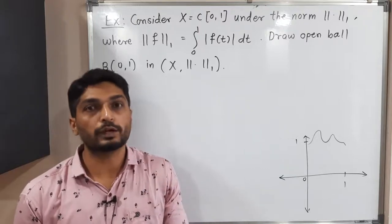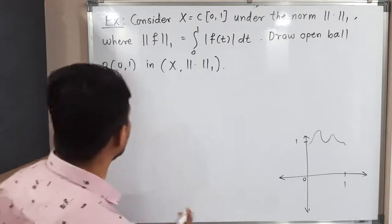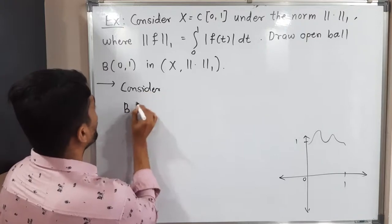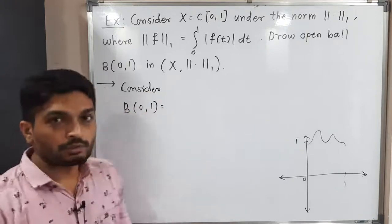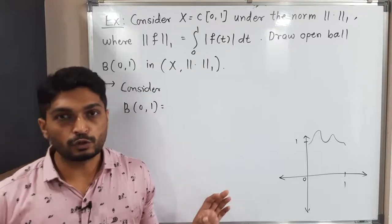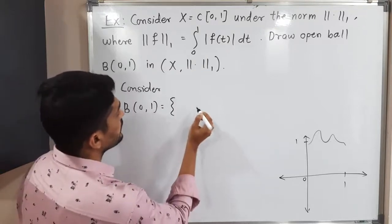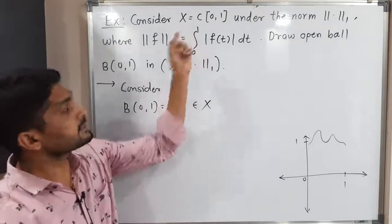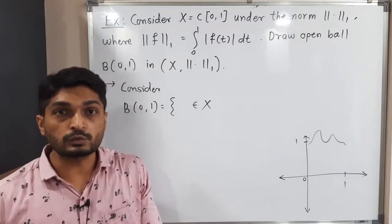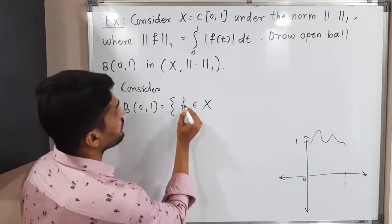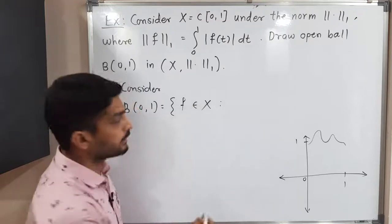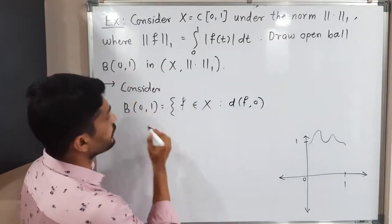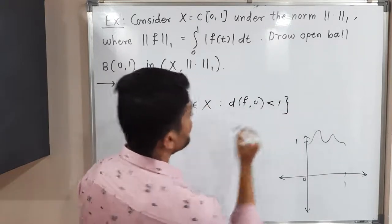Let us start to find it — we will simply follow the definition. Consider the open ball with center 0 and radius 1. By the definition of an open ball, we take an element F belonging to X. Since X is the set of all continuous functions, an element of X will be one function. The definition says D(F, 0) — F being the point and 0 the center — must be less than the radius, which is 1.